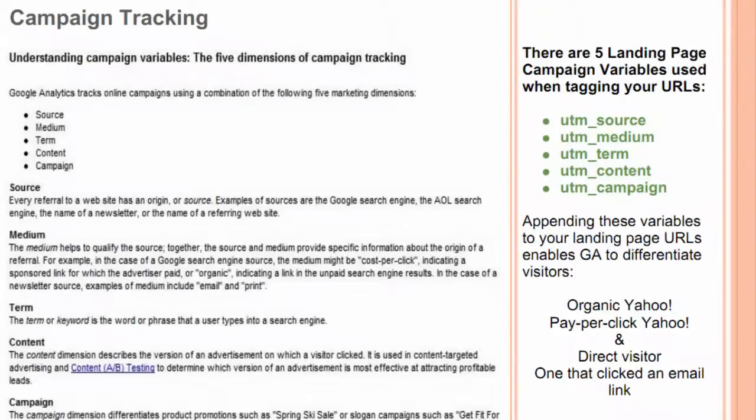There are five landing page campaign variables used when tagging your URLs: source, medium, term, content, and campaign. Appending these variables to your landing page URLs enables Google Analytics to differentiate visitors — such as whether they are organic Yahoo or pay-per-click Yahoo, and also the direct visitor or one that has clicked on an email link.